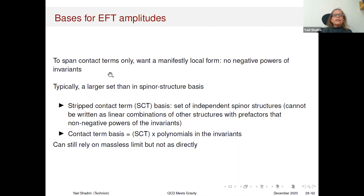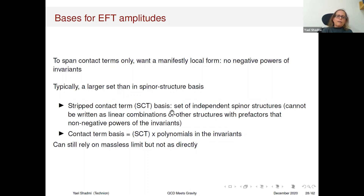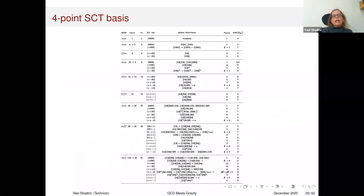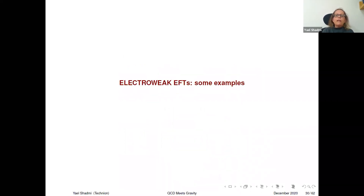For EFT purposes, we actually want to span just the contact terms and manifest the local form. For that we need a larger set. This is the full set of the basis that you need to span the electroweak amplitudes.